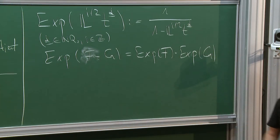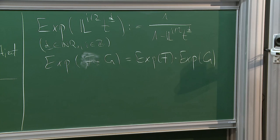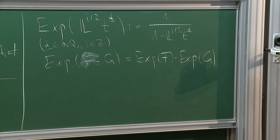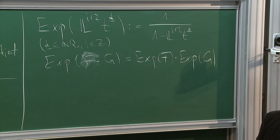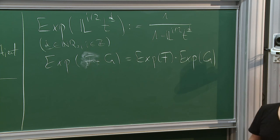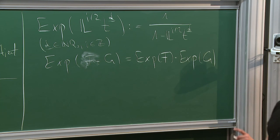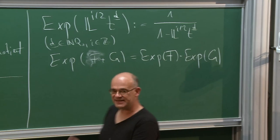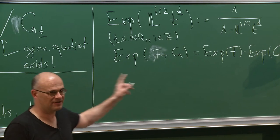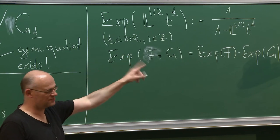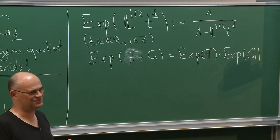The other axiom is that it should convert sums into products: Exp(f + g) = Exp(f) times Exp(g), just like you expect from an exponential. It's really like an exponential but the initial condition is: transform monomials into a geometric series. We need f and g to commute for this to work, so we will only do this under a certain technical commutativity assumption.